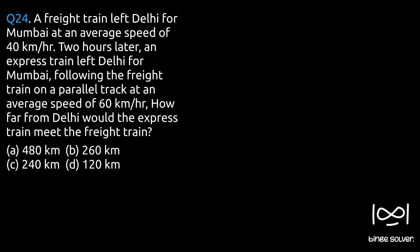Question 24. A freight train left Delhi for Mumbai at an average speed of 40 km per hour. Two hours later, an express train left Delhi for Mumbai, following the freight train on a parallel track at an average speed of 60 km per hour. How far from Delhi would the express train meet the freight train?